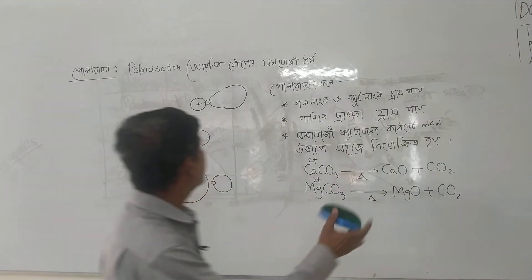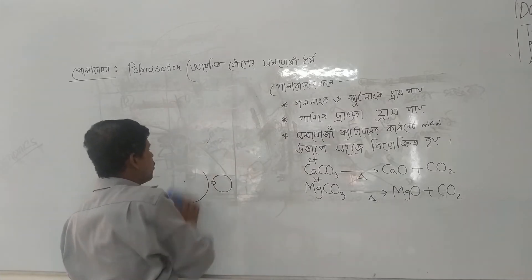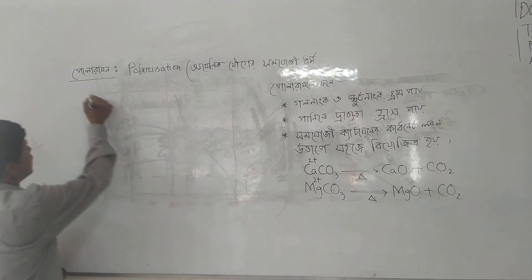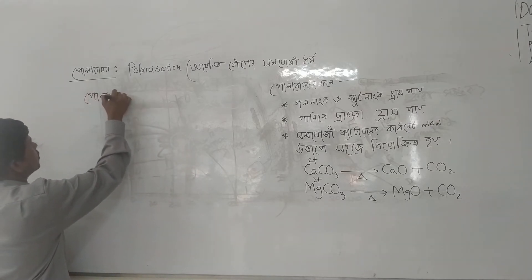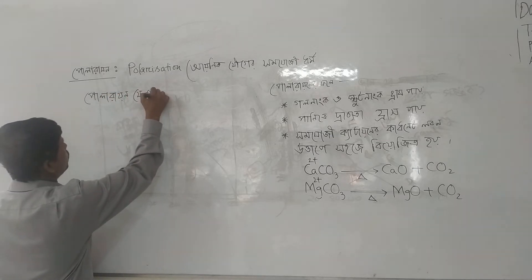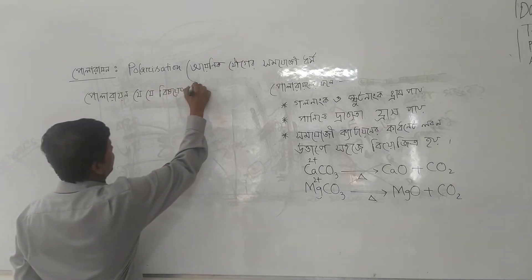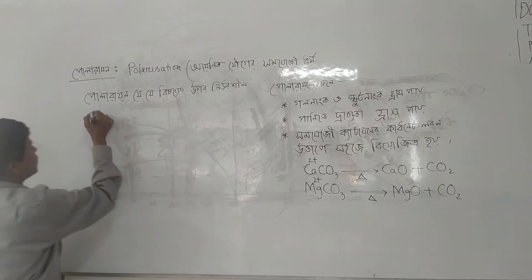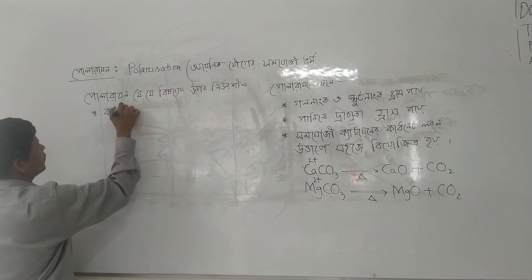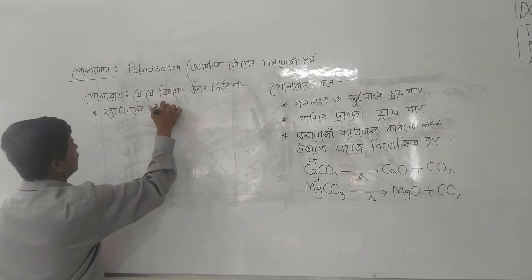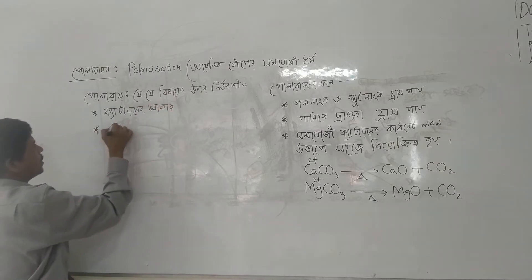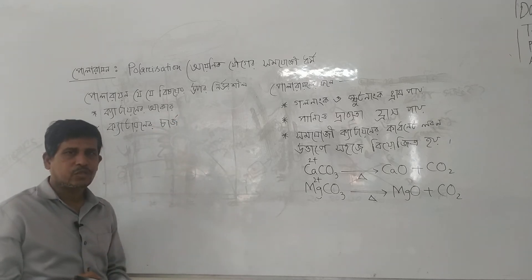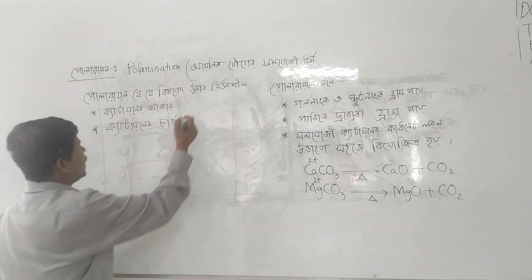Now we can see the explanation of polarization. The polarity is very similar in form. The charge is about positive 1, 2, or 3, meaning the charge on the cation determines the degree of polarization.